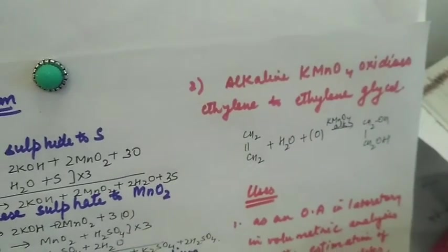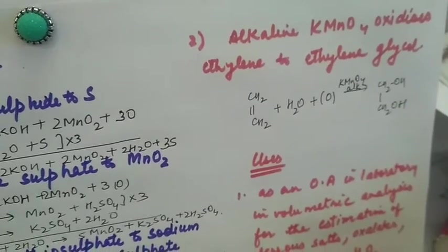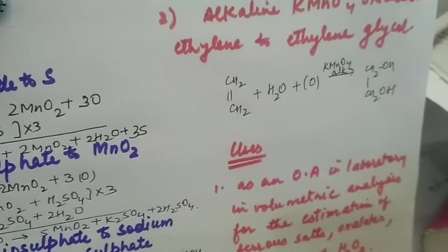Another reaction is with ethylene. Alkaline KMnO4 oxidizes ethylene to ethylene glycol.